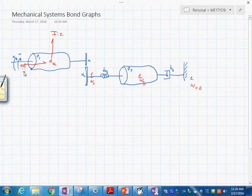Then over here we have this i element with value j sub 2. This one that is a reference point I'm going to call it the source of flow with omega equals to zero with flow equals zero.